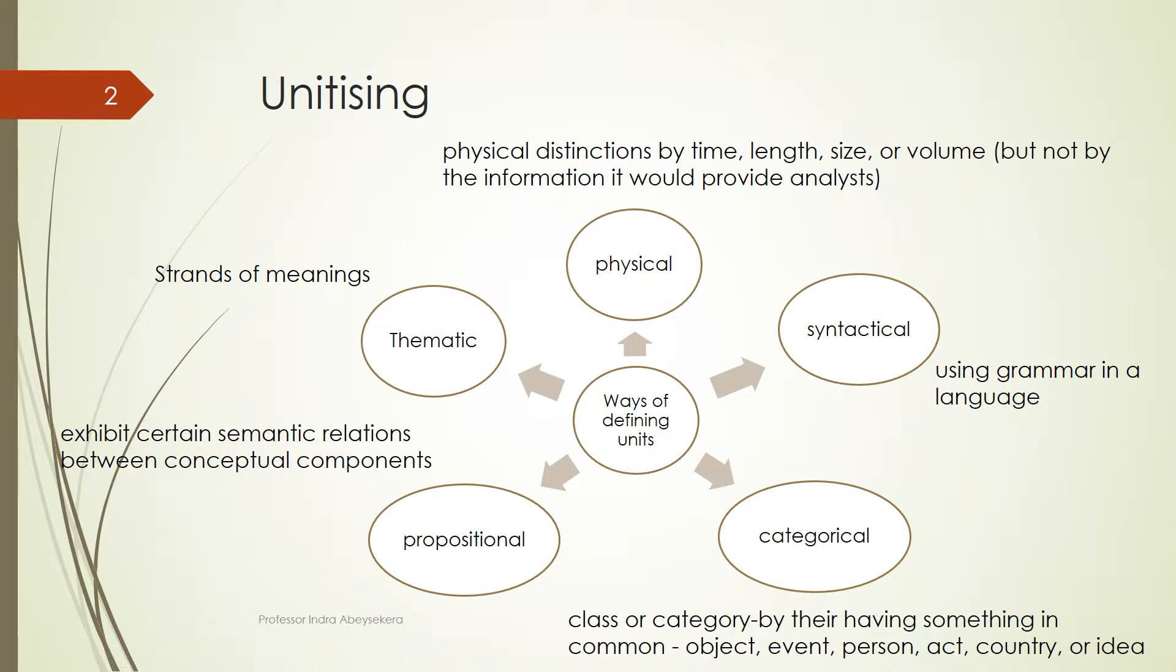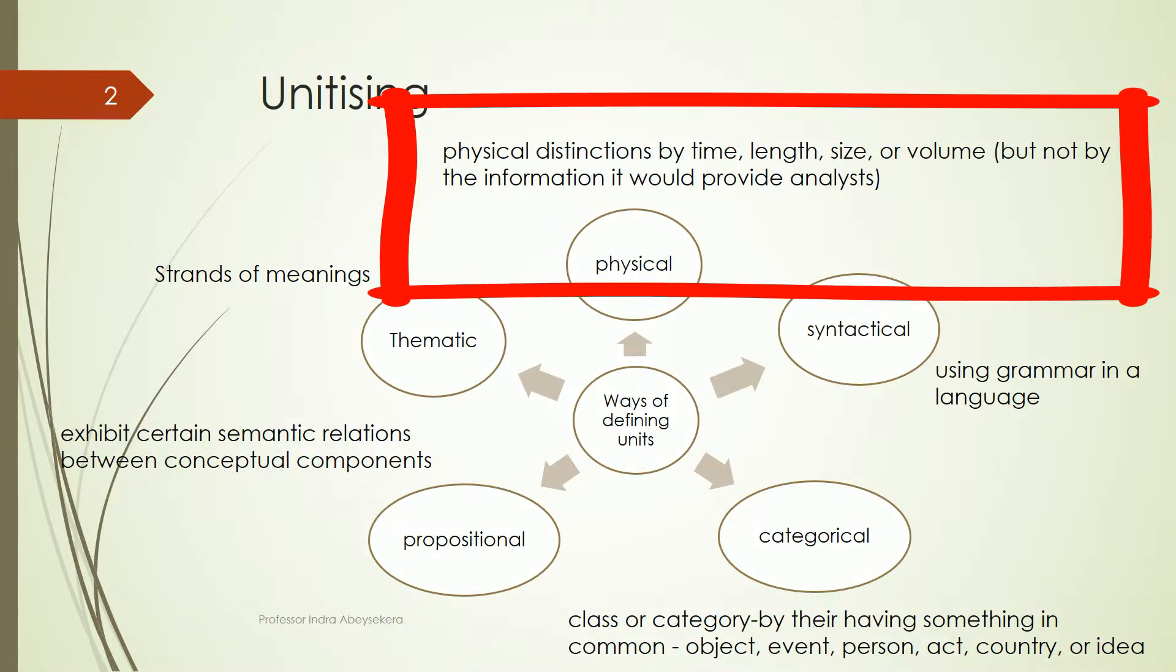There are different ways to make units. In content analysis, the first one is physical. We can make physical distinctions using time, length, size, or volume.